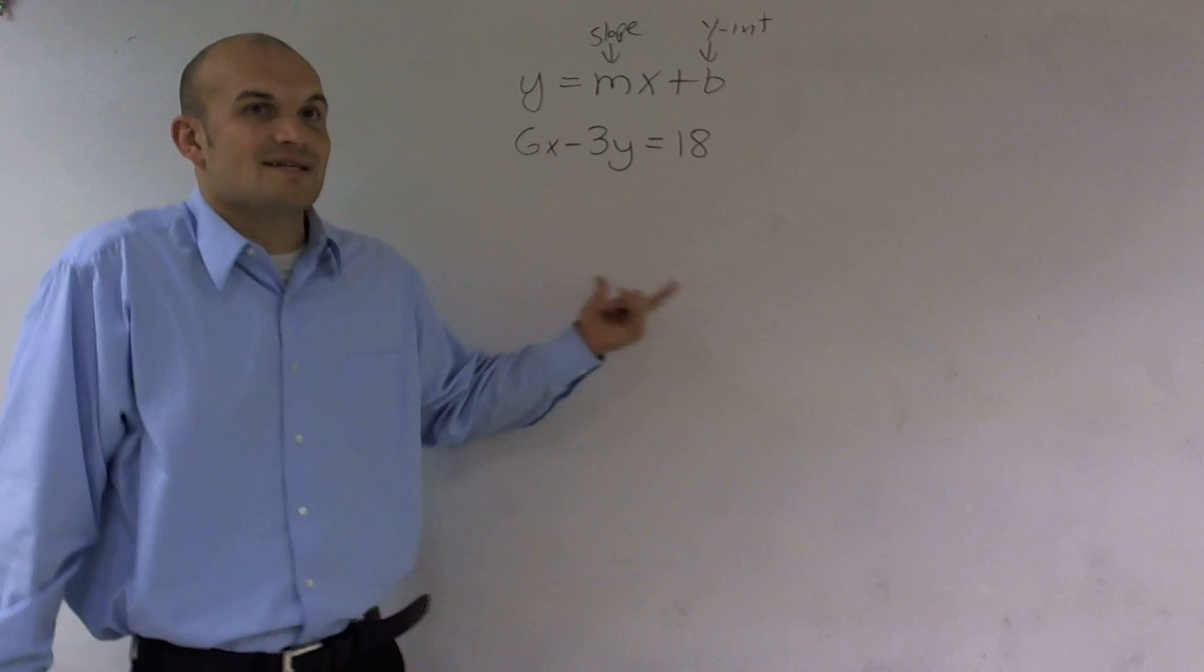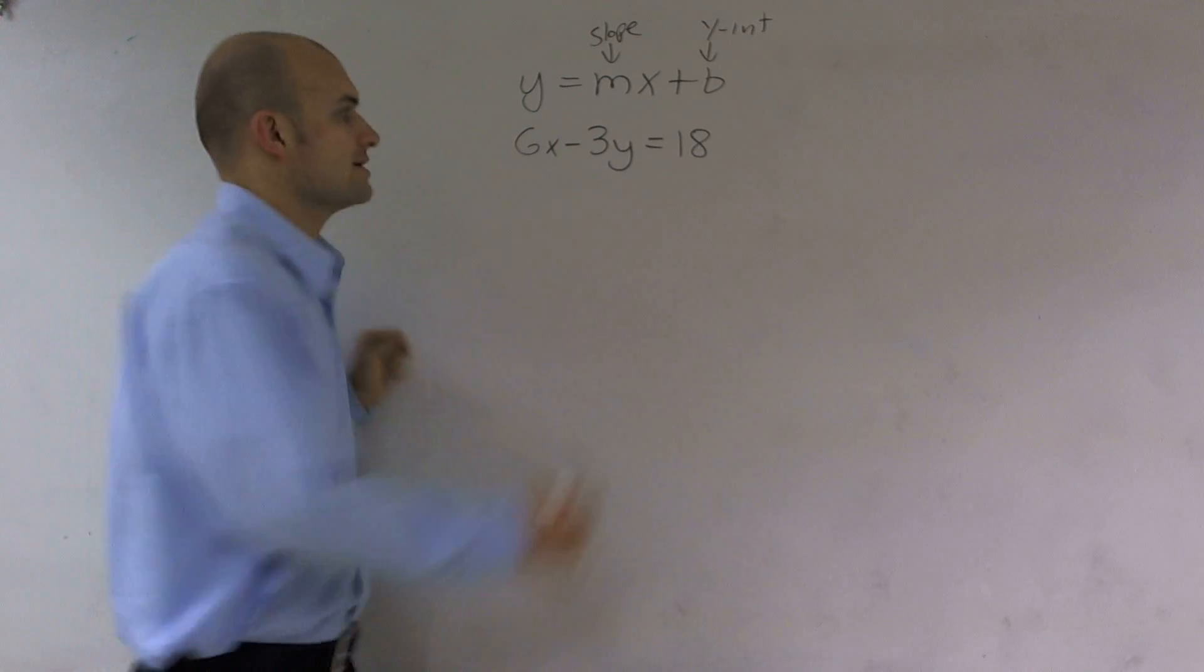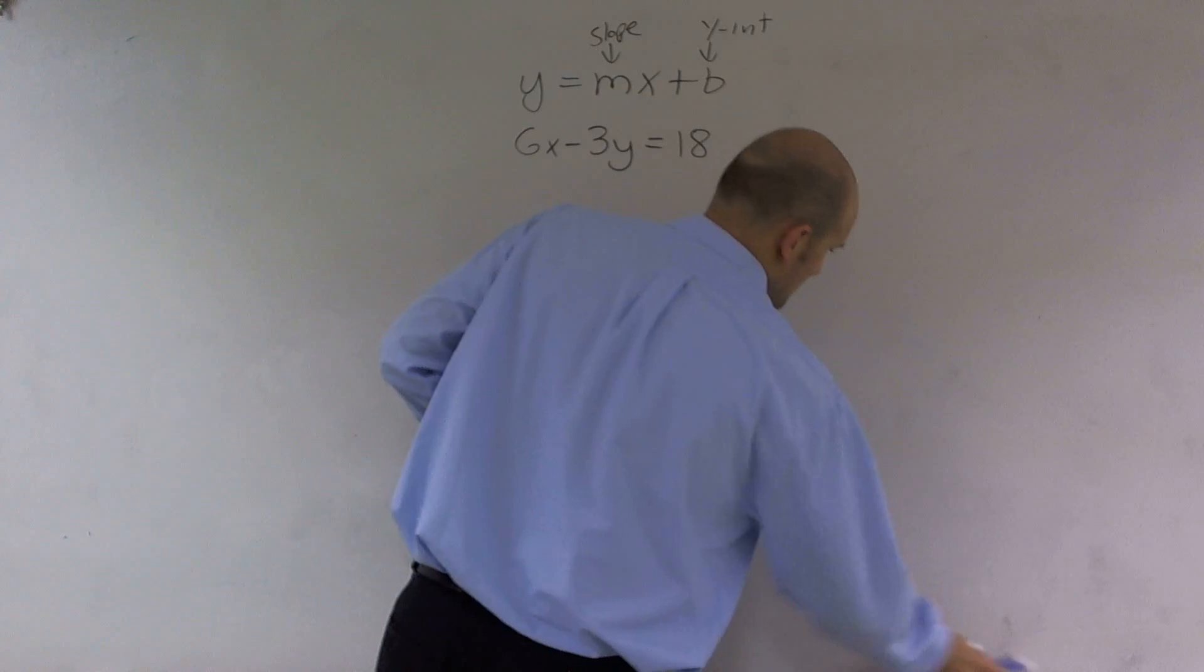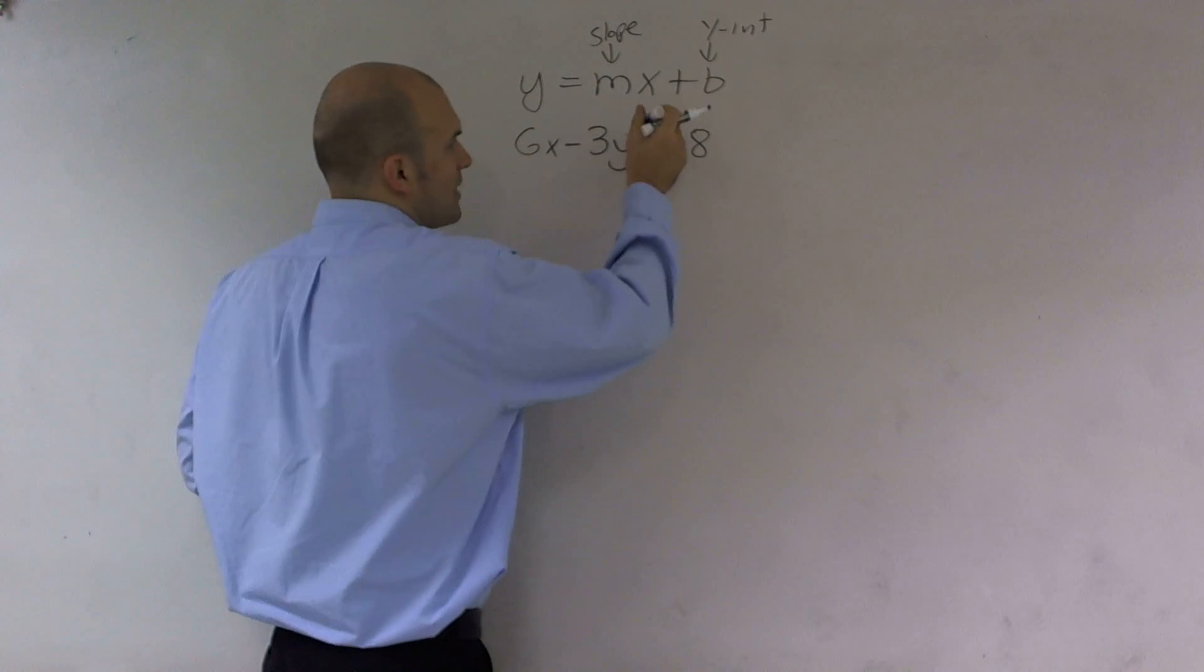So when I'm doing this, essentially what I need to do is solve this equation for y. I want to get my y by itself. There's a couple ways you can do this. One way that I'm going to take is I'm going to circle my y.